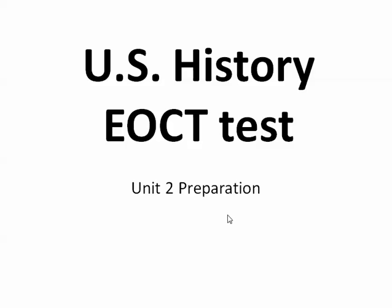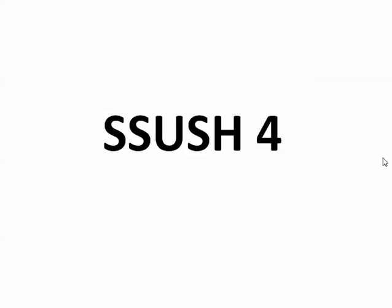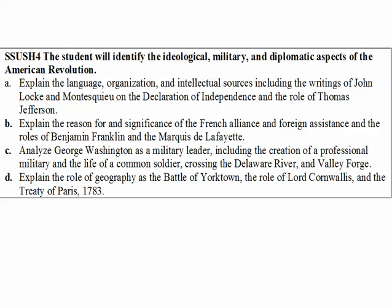This video is going to be the start of Unit 2, our Unit 2 preparation for the end of course test. Unit 2 has Standard 4 and Standard 5 in it. We're going to concentrate right now on Standard 4. Standard 4 looks small, but we want to look at a close examination of the standards because this is going to give us some clues about what we need to know for the end of course test for United States history.